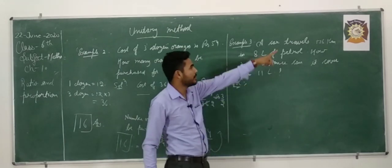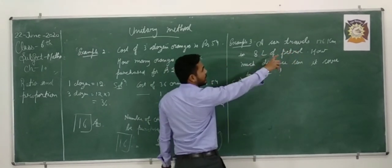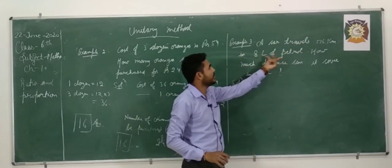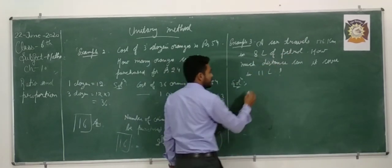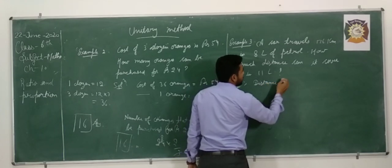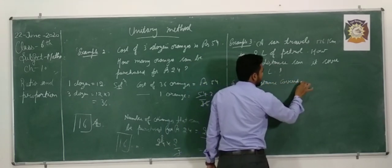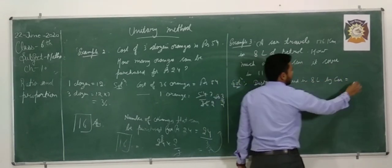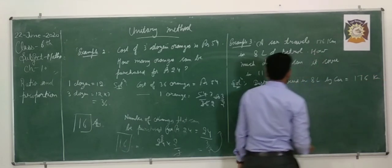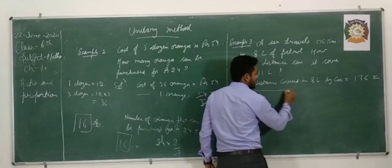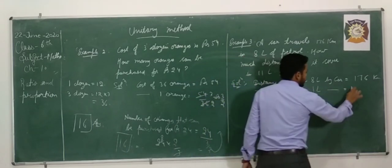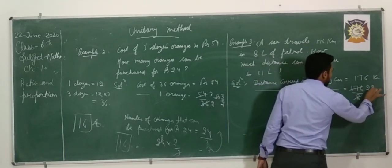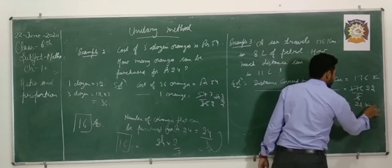First of all, you write distance covered in 8 liter by car, that is equal to 176 km. Now, with the unitary method, distance covered in 1 liter by car, that is equal to 176 by 8. That is equal to 22 km.